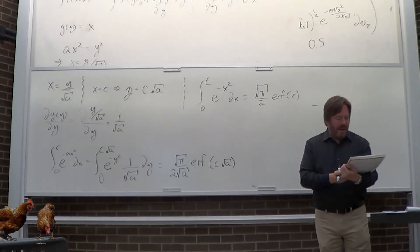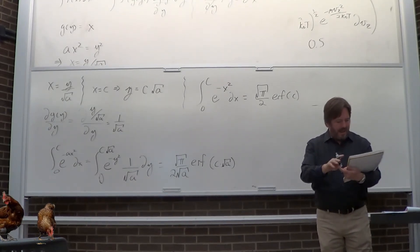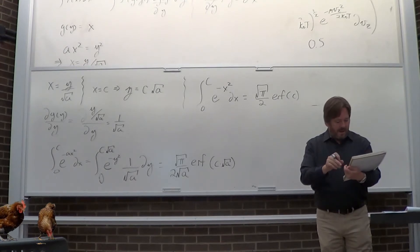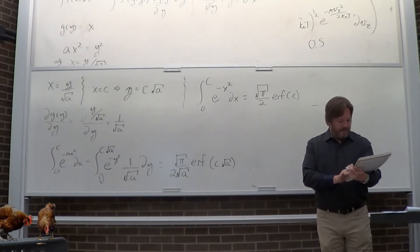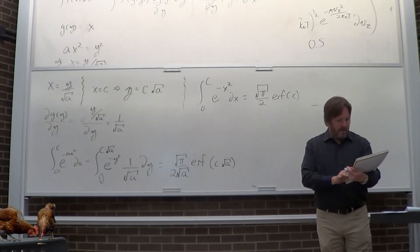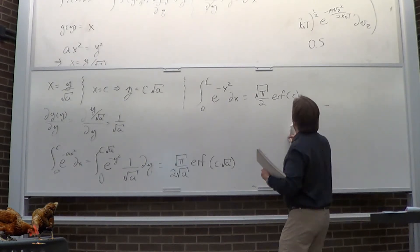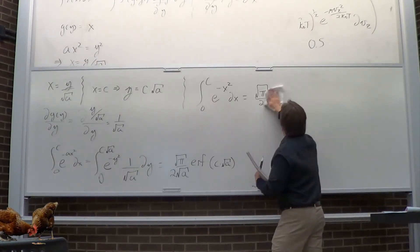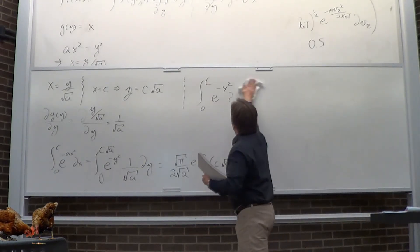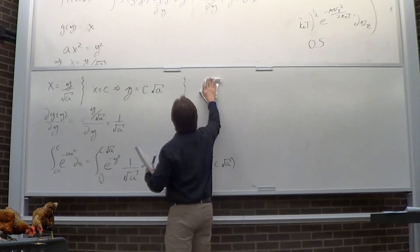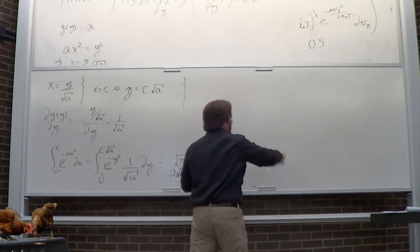The trick is: look at that transformation formula (it'll be on the cheat sheet), identify your x's and y's, transform the function, apply the Jacobian, and don't screw up the limits.